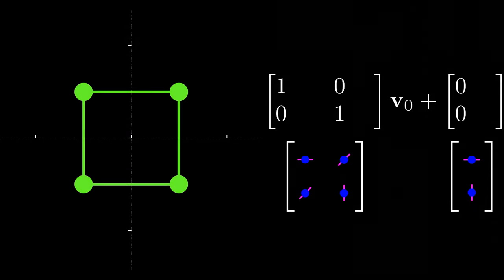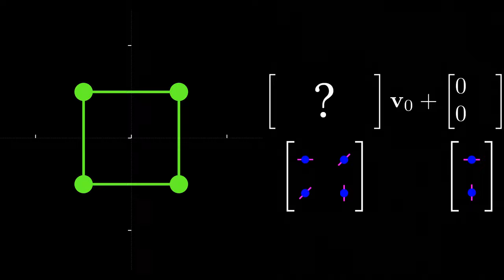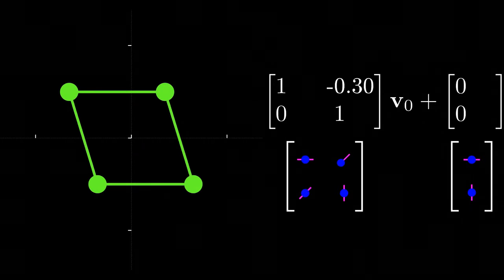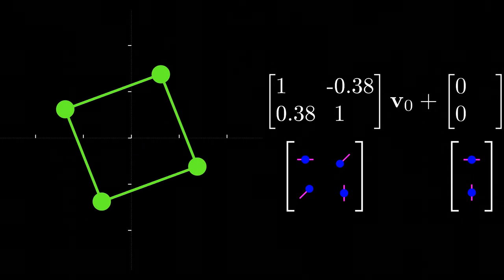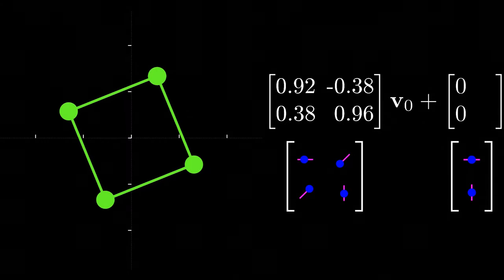So now let's think about what we might need to perform a more complicated operation, like rotation for example. Well we could first shear in one direction before shearing the opposite way, which would create a rotational-like effect. But the square would end up being just a little bit too large in this case, so we'd also need to scale things back just a little bit.